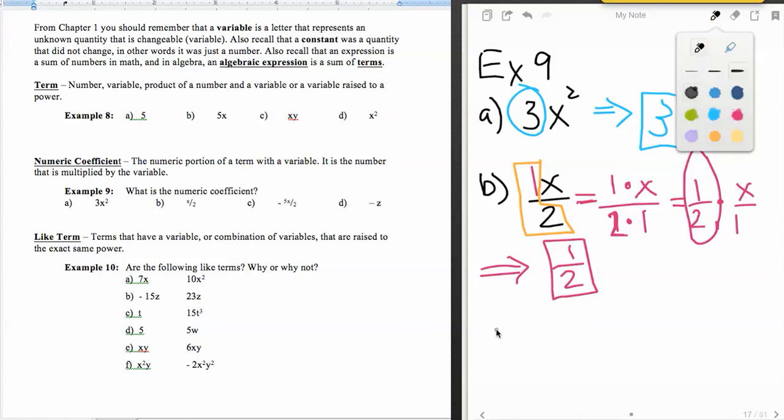All right, and our next one here, hopefully you figured out how to find those numeric coefficients when they're fractions. So why don't you pause this for a second and see if you get the right answer. All right. So did you get negative five halves as the numeric coefficient, the numerator number and the denominator number, just like that.